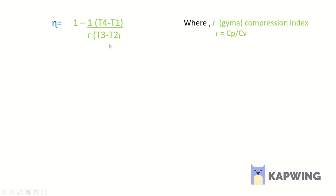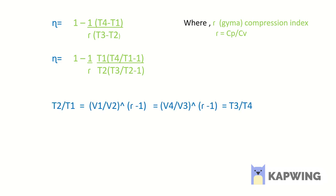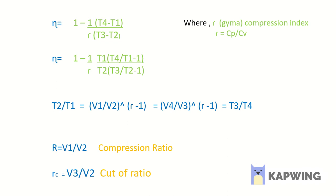Dividing the numerator (T4 minus T1) by T1 and the denominator (T3 minus T2) by T2, we use the relation between temperature and volume in terms of gamma: T2/T1 equals (V1/V2)^(gamma minus 1), which also equals (V4/V3)^(gamma minus 1), and equals T3/T4. The compression ratio is defined as V1/V2.